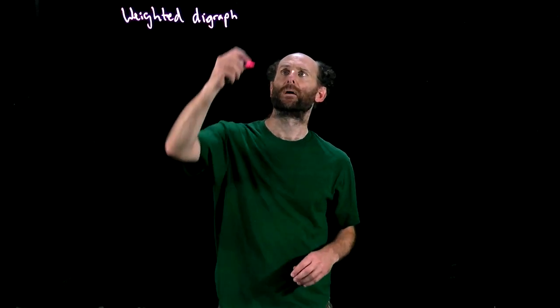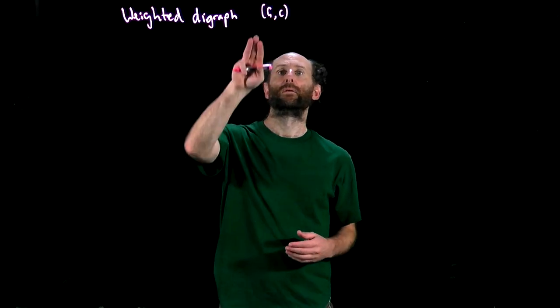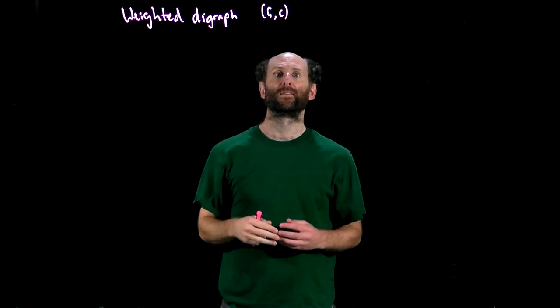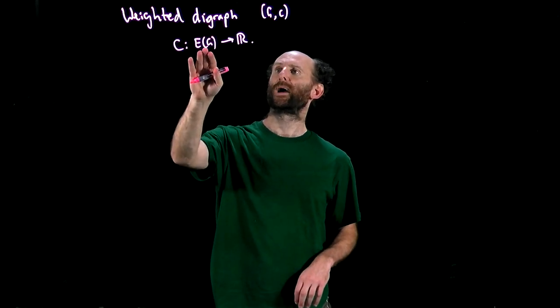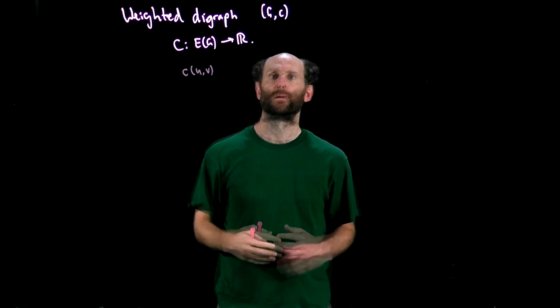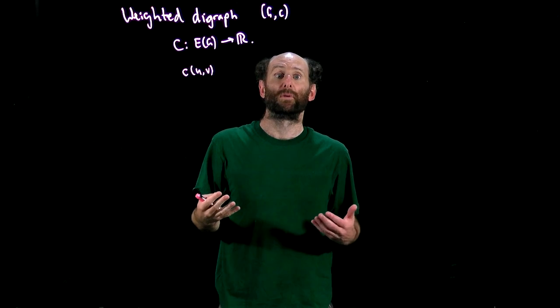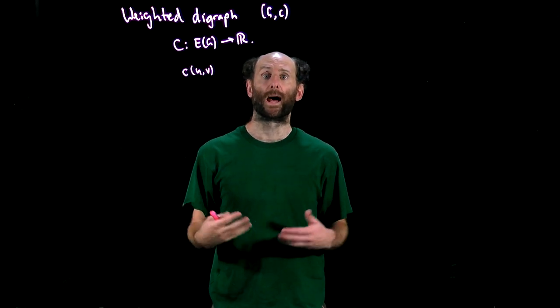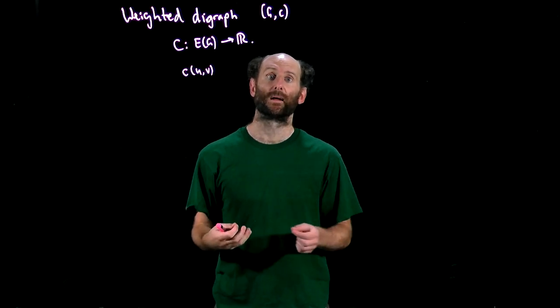In our discussions we'll use the terms weight, distance and cost interchangeably. So let's formalize some of this. A weighted digraph is a pair G and C where G is the digraph and C is a function which associates each arc with some real number. So C takes an arc and maps it to a real number. For an arc UV, CUV is just the cost of using UV. Notice that an unweighted digraph can be considered as a weighted digraph by just giving each arc weight one.